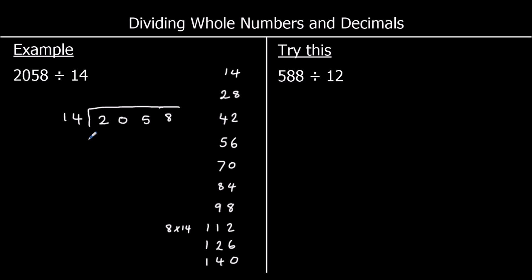Now we start the process. How many 14s go into 2 — the thousands column? That's 0, and that means we've got 2 left over to go into the hundreds. How many 14s go into 20? 1 fourteen goes into 20, that's 14, so there's 6 left over — because 14 plus 6 makes 20.